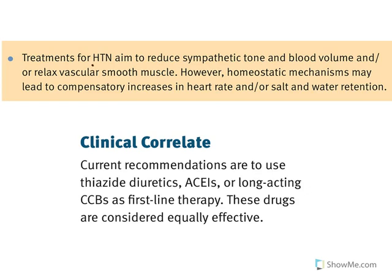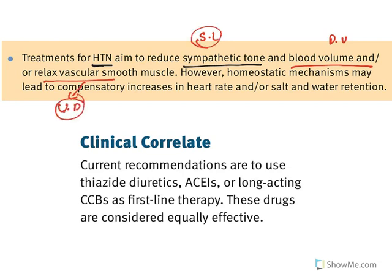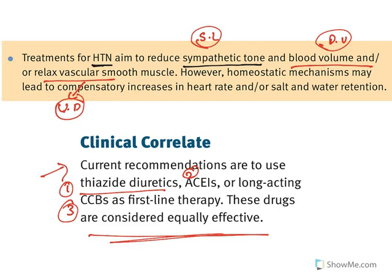The major goal in treating hypertension is to reduce sympathetic tone — that is why we use sympatholytics — and to reduce blood volume, which is achieved with diuretics, and to relax vascular smooth muscle, which is what vasodilators do. The current recommendation is to use thiazide diuretics, ACE inhibitors, or calcium channel blockers, as these drugs are considered equally effective.